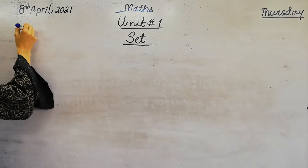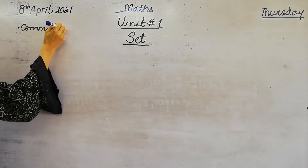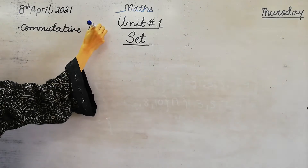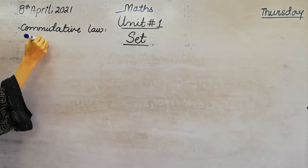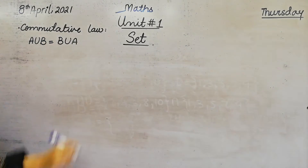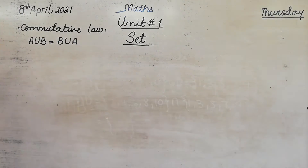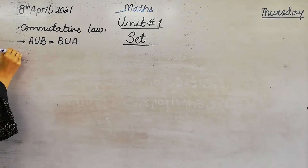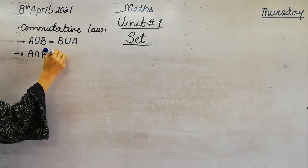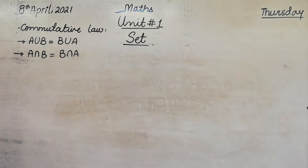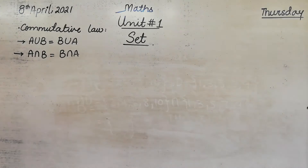Now, the commutative law states: A union B is equal to B union A. This is the commutative law with respect to union. And A intersection B is equal to B intersection A — this is with respect to intersection.